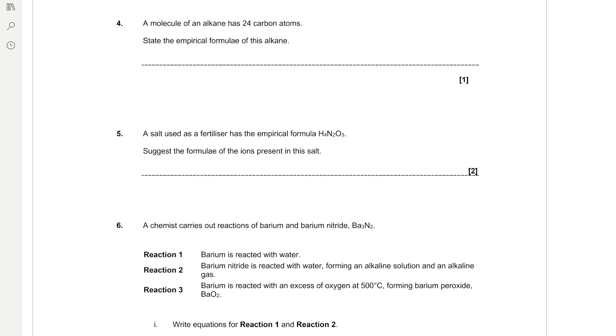A molecule of an alkane has 24 carbon atoms. State the empirical formula of this alkane. So if we've got 24 carbon atoms and it's an alkane we need to remember the general formula of an alkane which is CnH2n plus 2. So 2 times 24 plus 2 is 50.